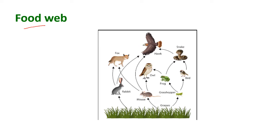The next topic is the food web. In this picture, there are many food chains. The first: grass is eaten by rabbit, rabbits are eaten by fox. The second: rabbits eat grass and are eaten by the eagle.